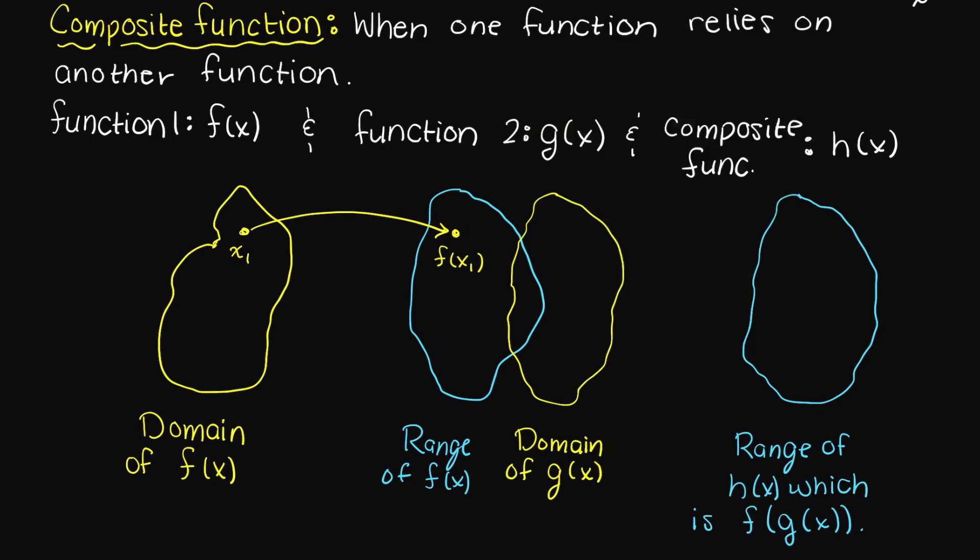Therefore, we have this Venn diagram in the middle here. And only the values that land in the purple shaded region are valid for our composite function. I think this concept is best taught through a quick example. So let's give some values to our functions and define a relevant problem.